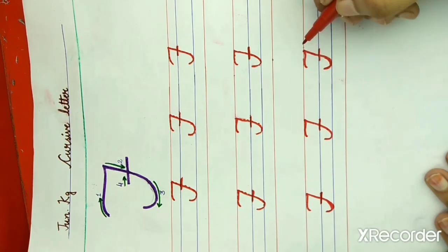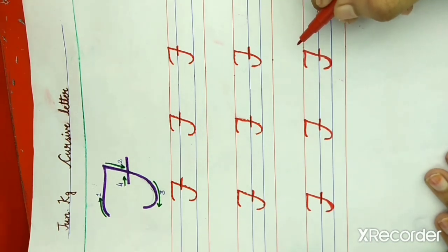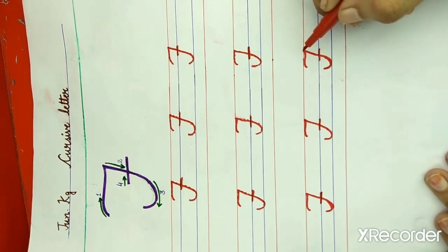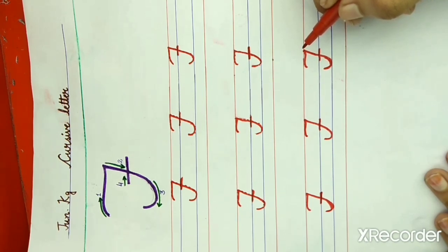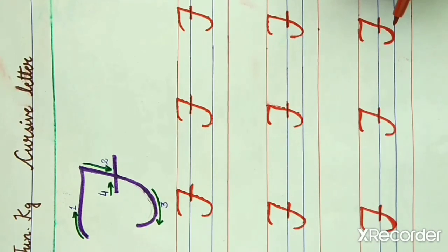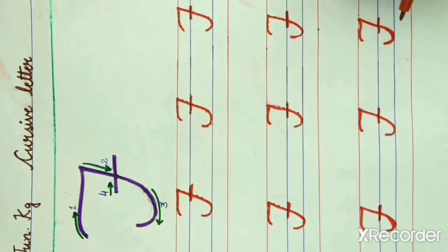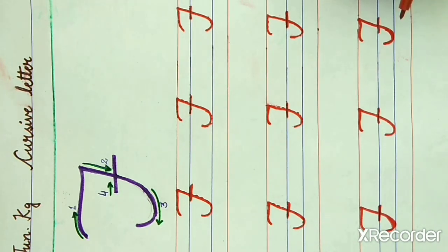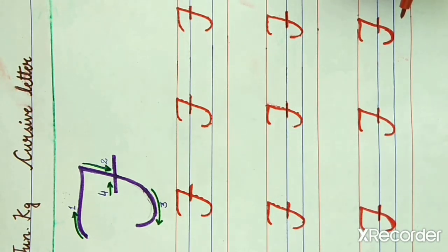Now, what you have to do in homework: you have to do the practice of letter F in the cursive writing book, click a picture, and send it to the school WhatsApp number. Children, take care and keep studying.